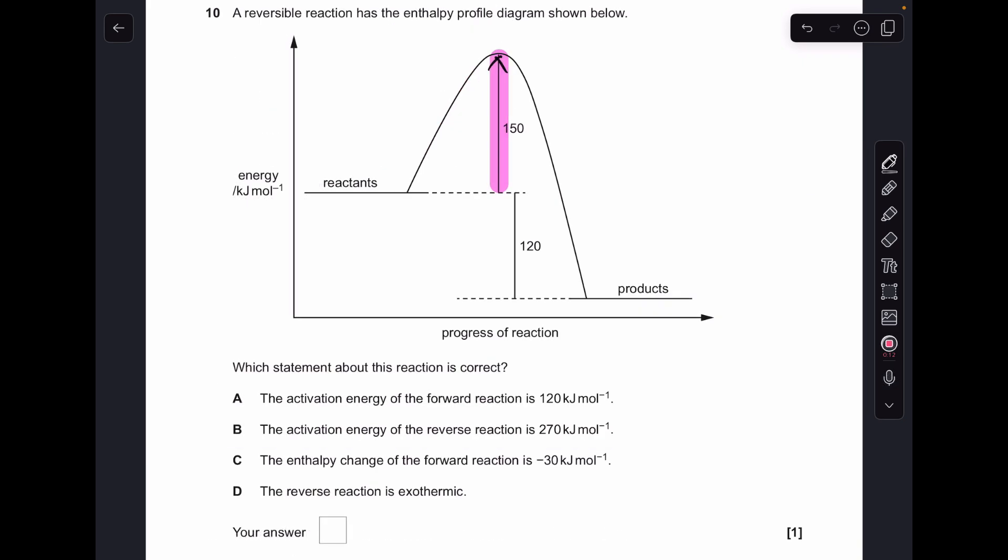Number 10, so I've highlighted the activation energy for the forward reaction. You can see it's 150, so A is wrong. B, there's the activation energy for the reverse reaction, so that's going to be 120 plus 150, so that's 270. That's the right answer.